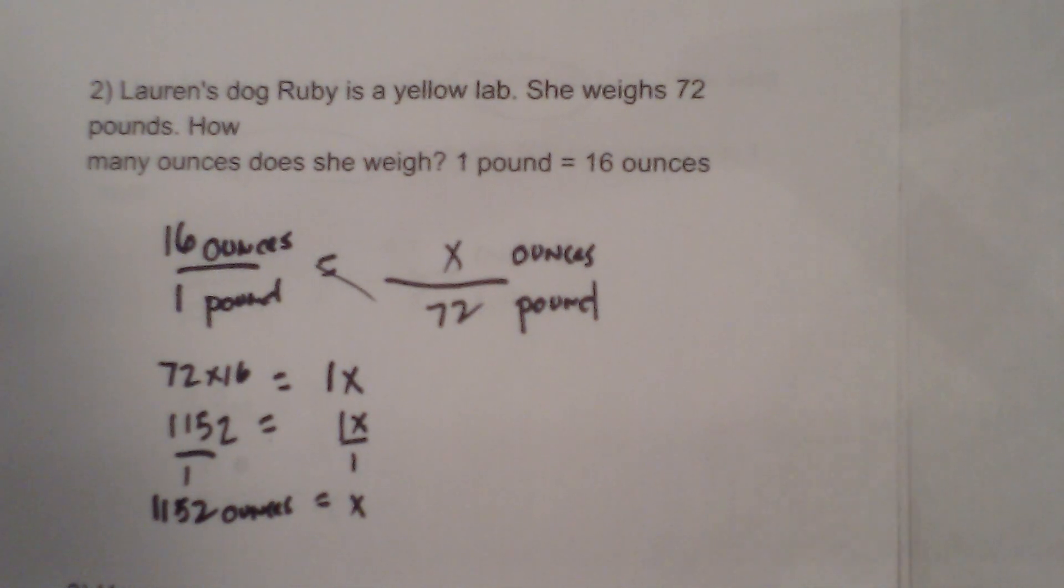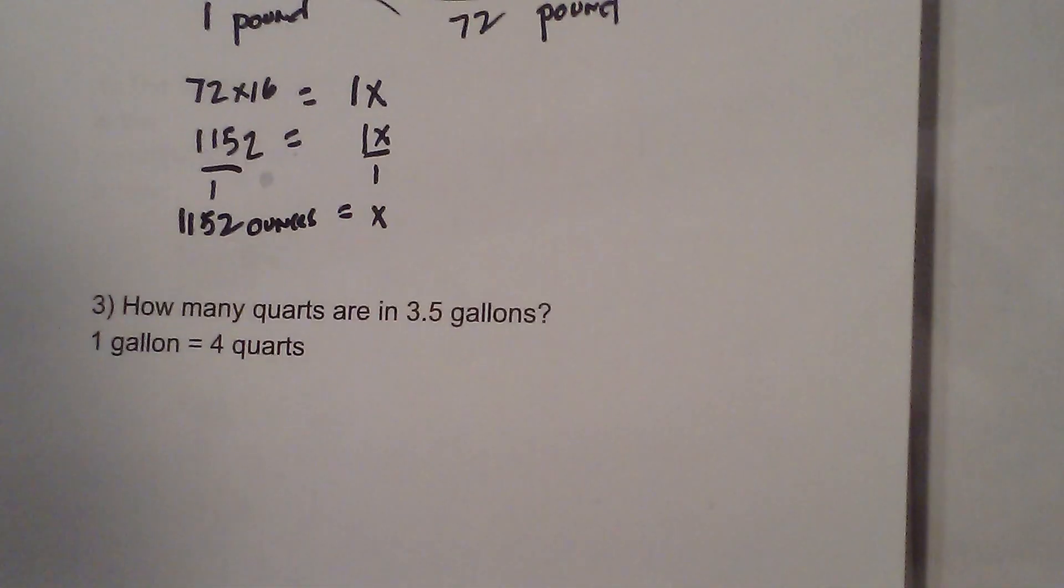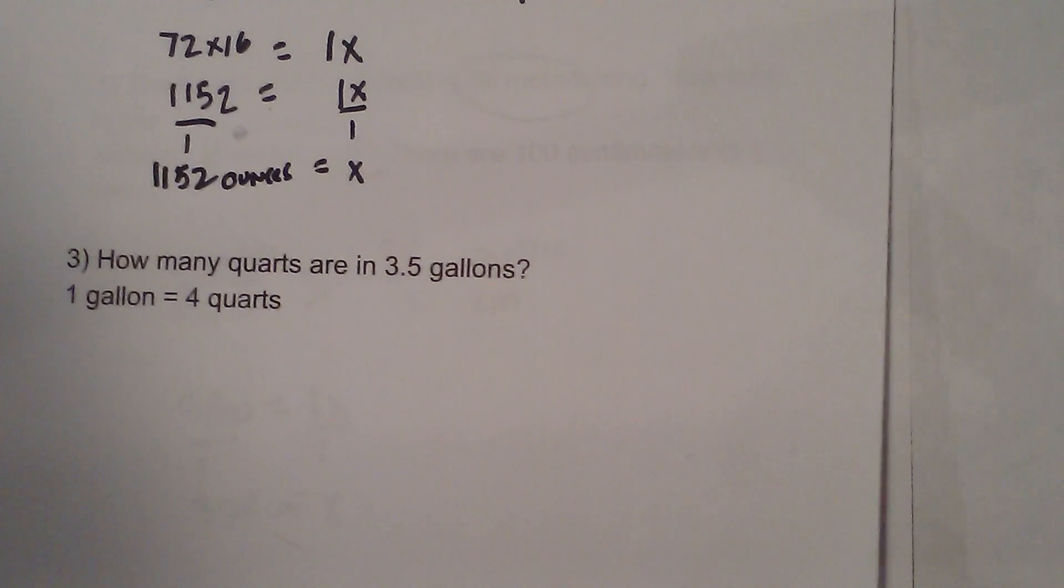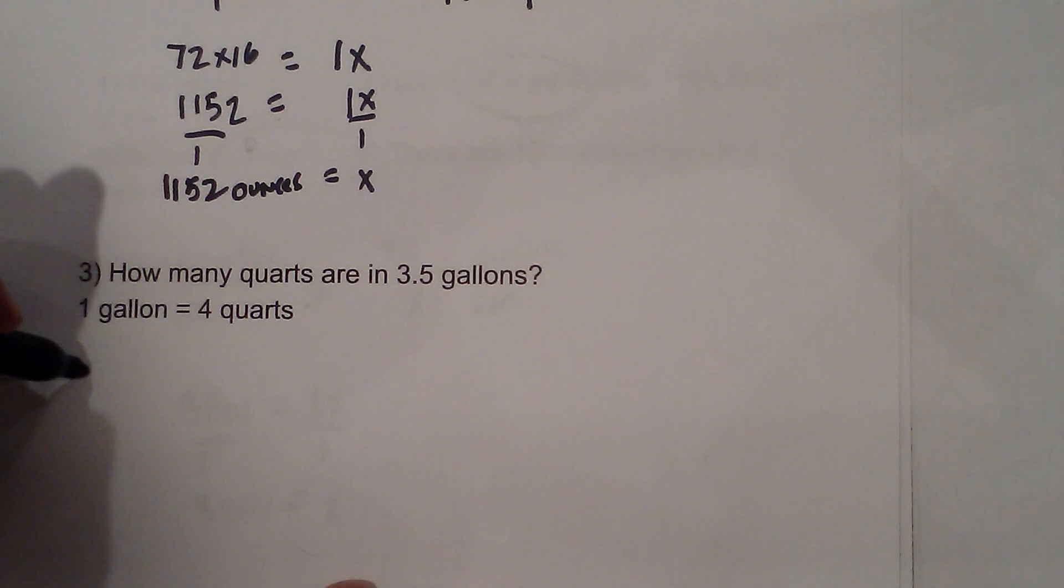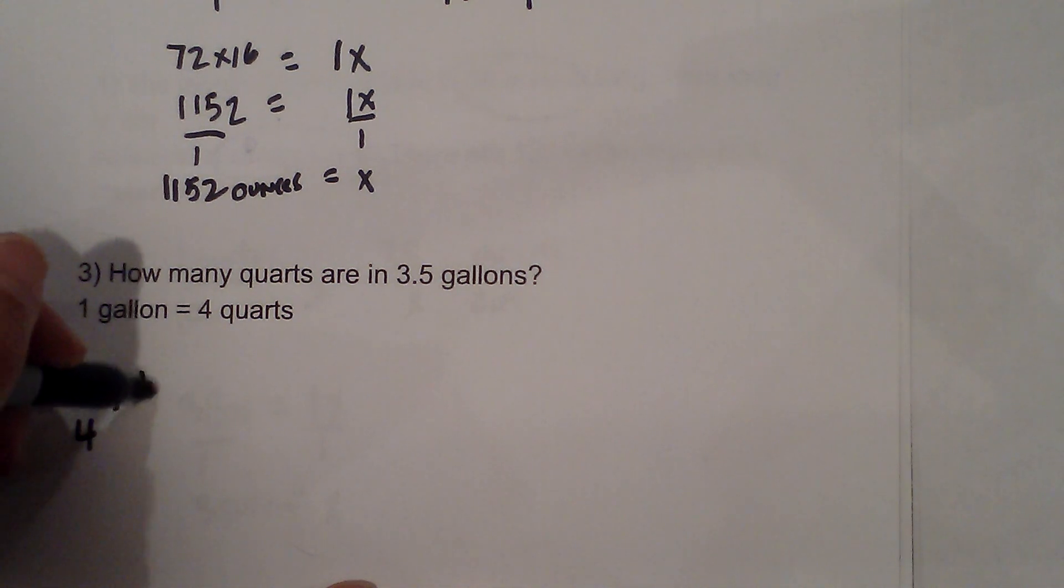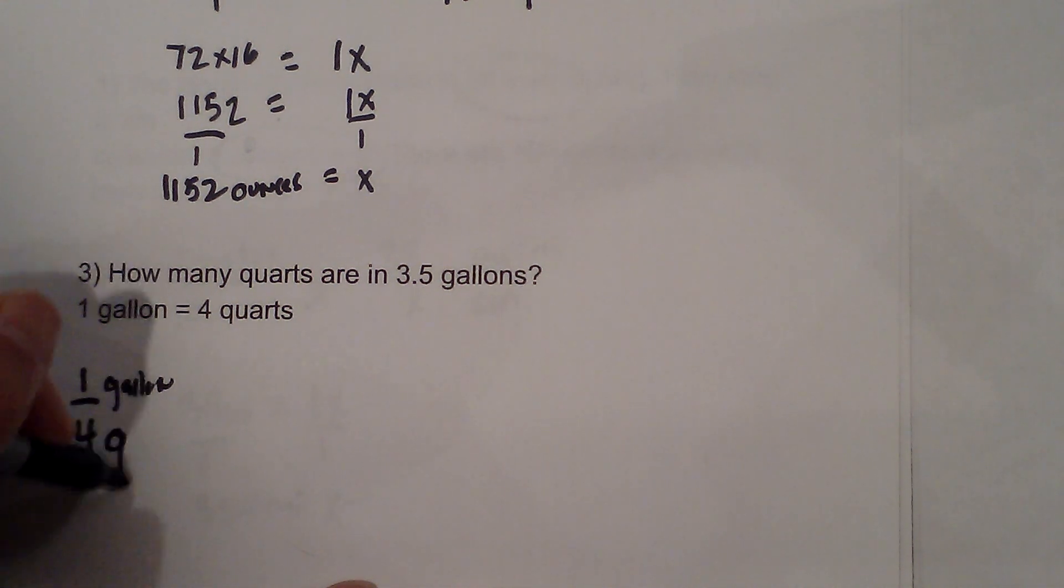Now let's work the last one and I'm going to show you that it doesn't matter which unit you put on top. It says how many quarts are in 3.5 gallons? One gallon is equal to 4 quarts. So I'm going to set it up like 1 gallon is equal to 4 quarts.